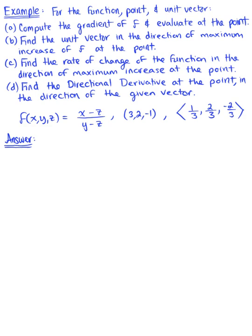We have a lot to do, so here we go. Part A: we want to find the gradient. By now we know that the gradient of a function at an ordered triplet (a, b, c) is a vector whose components are defined by the partial derivatives. So we have the partial derivative of the function with respect to x at the given point, the partial derivative with respect to y at the given point, and the partial derivative with respect to z at the given point.